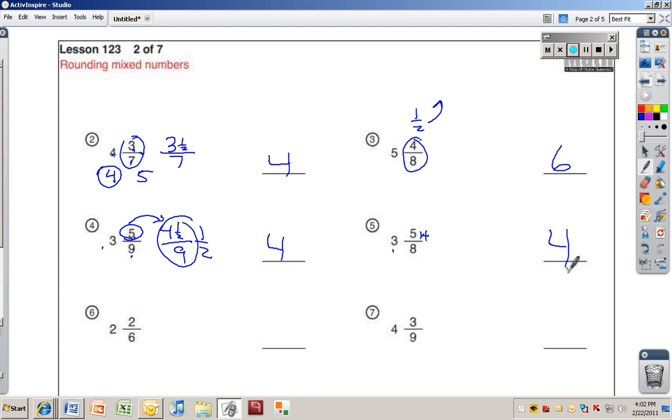Okay, 2 and 2 sixths. Do you think 2 sixths is smaller or bigger than a half? It's smaller. It's smaller. Well, what would a half be in sixths? 3 sixths. 3 sixths would be a half, right? So this is 2 sixths, so it's smaller than a half. So what am I going to round that to? 3. No, 2. 2. I'm going to keep it down at the 2 instead of going up to the 3.